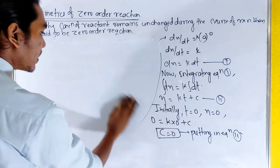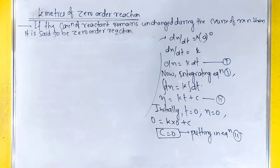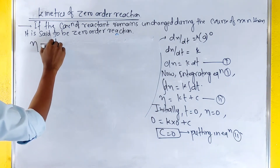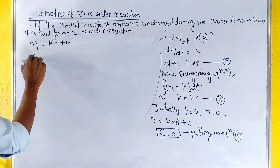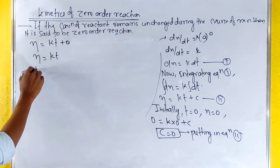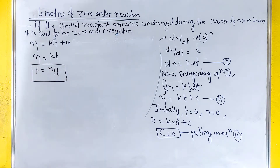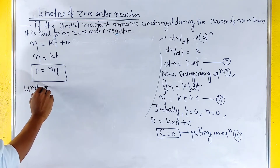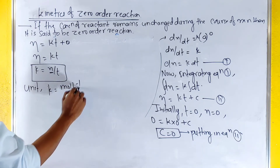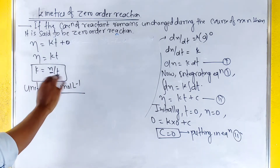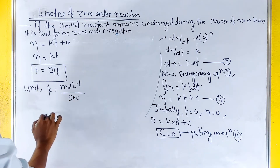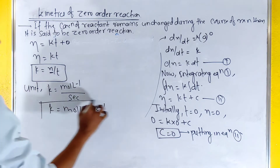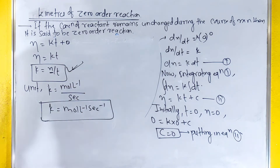Since C equals zero, putting into equation 2 we get x equals kt. So k equals x by t. For the unit of k: x is in mol per liter and t is in seconds, so k is equal to mol per liter per second. That is the unit of k for zero-order reactions.